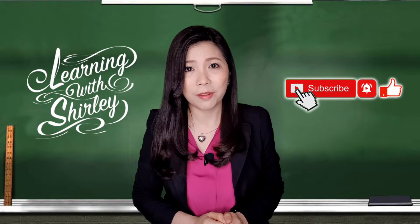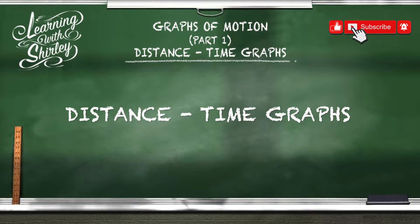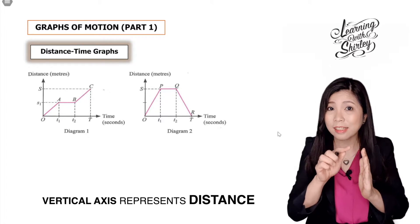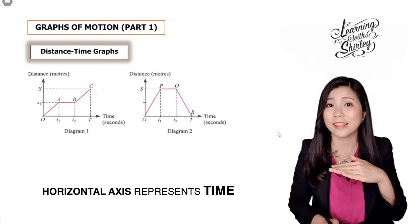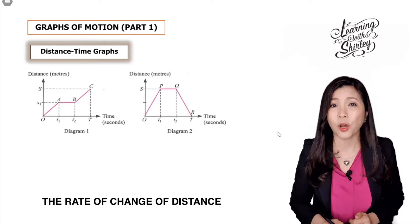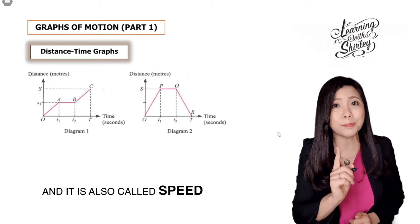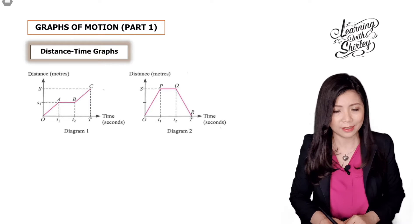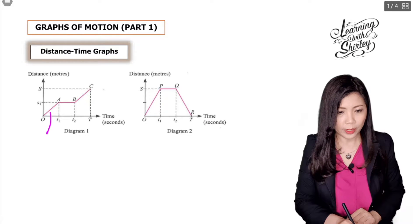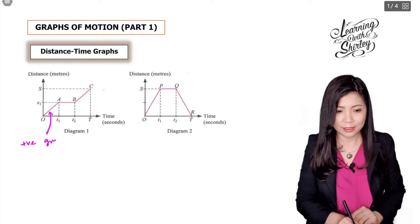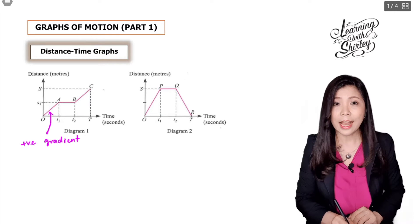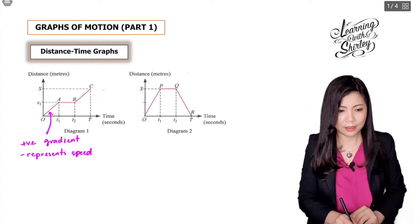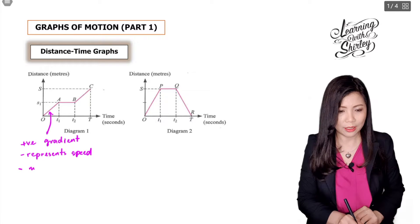Let's understand what a distance-time graph is. The vertical axis of the graph represents the distance, whereas the horizontal axis represents the time. The gradient of the graph represents the rate of change of distance with respect to time, and it is also called speed. For line OA, it has a positive gradient, which represents speed and means motion at uniform speed.